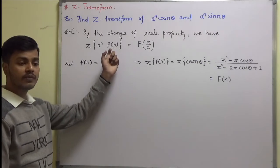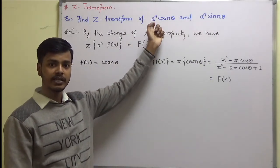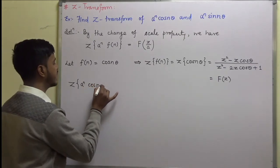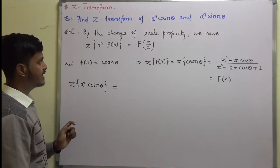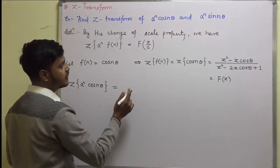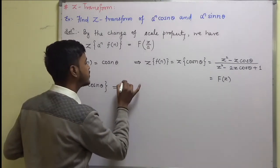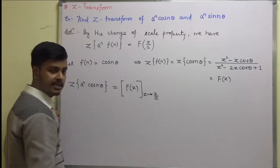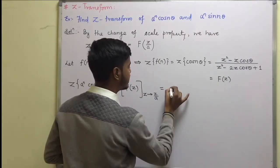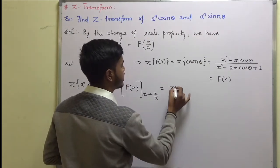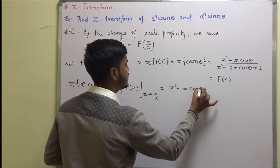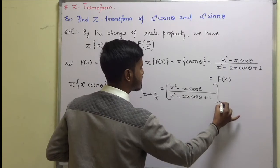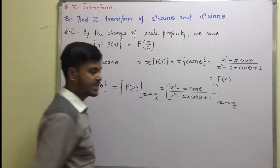Now let us make use of this property to get the Z transform of a to the power n into cosine n theta. The Z transform of a to the power n into cosine n theta is equal to F of z by a. So what we are going to do is write F of z and replace z with z by a. So this can be written as: z squared minus z cosine theta upon z squared minus 2z cosine theta plus 1, and you have to replace z with z by a.